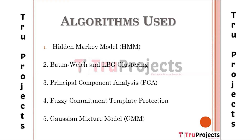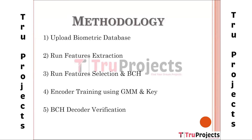Next is Fuzzy Commitment Template Protection. This process involves encoding the selected features using a private key, making it challenging for unauthorized users to interpret the data even if they gain access to encrypted biometric templates. Next is Gaussian Mixture Model (GMM). The encoded features are trained using the GMM algorithm to build a probabilistic model of the biometric data, facilitating accurate verification and authentication of users based on their biometric features.